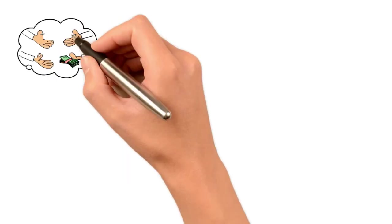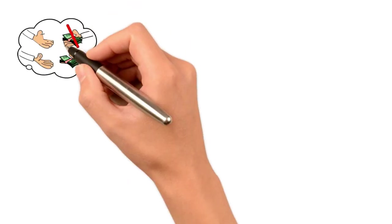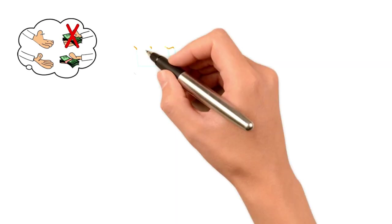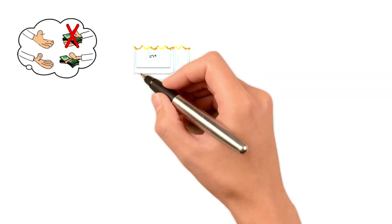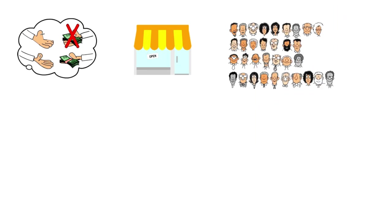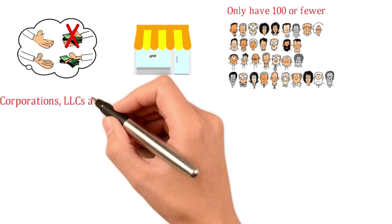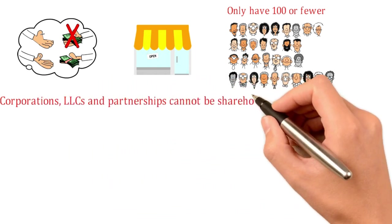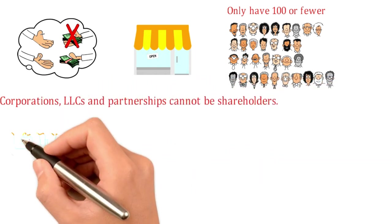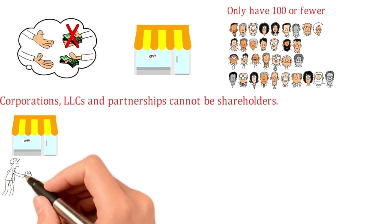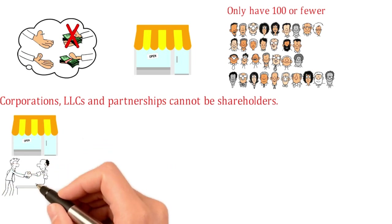The S corporation avoids double taxation; however, it is suitable only for small businesses due to some limitations. It can only have 100 or fewer shareholders and they must be individuals — corporations, LLCs, and partnerships cannot be shareholders. S corporations may only have one class of stock.